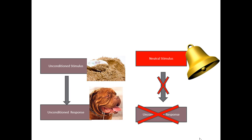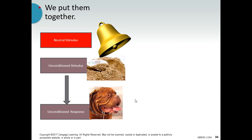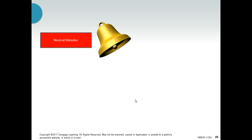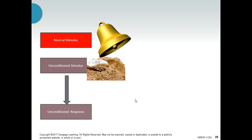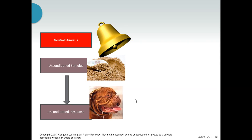What Pavlov wanted to do was to make the dog salivate to the bell. So we want the bell to take on the qualities of the unconditioned stimulus, and we do this by pairing them. We put them together — ring the bell, give the dogs the food powder, and the dogs salivate because of the food powder. You can't do this just once; in any normal classical conditioning situation, you have to do it over and over again: bell, food powder, dogs salivate because of the food powder.